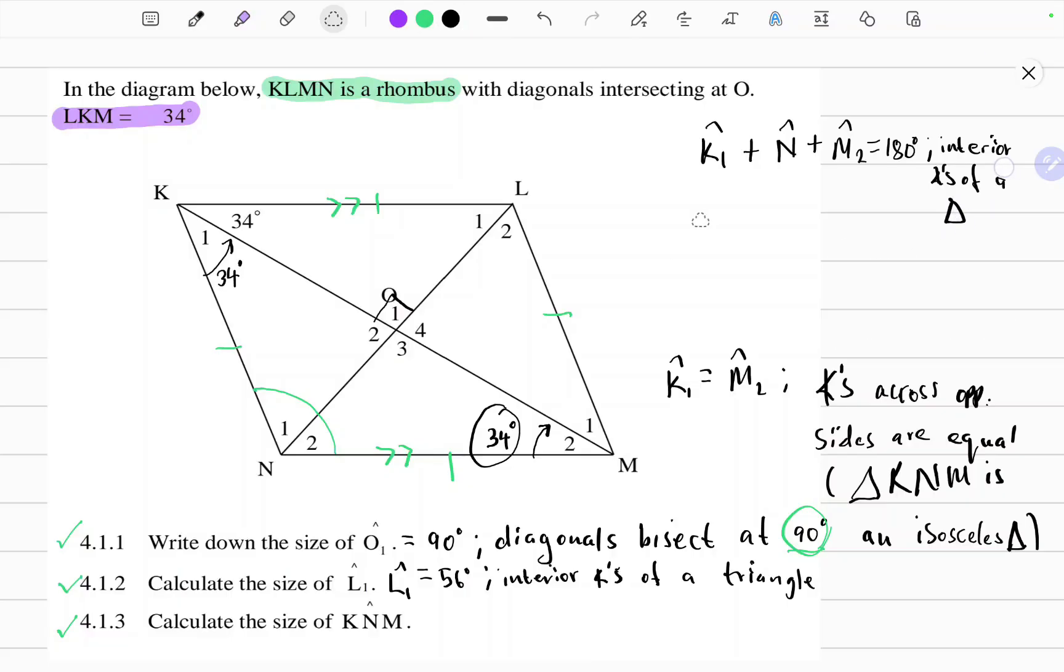So now we can say K1, 34 degrees plus angle N is the unknown. Angle M2 is 34 degrees. That should give us 180 degrees. So isolating angle N gives us 180 degrees minus 34 minus 34 degrees. Therefore angle N equals 112 degrees. So angle KNM is 112 degrees.